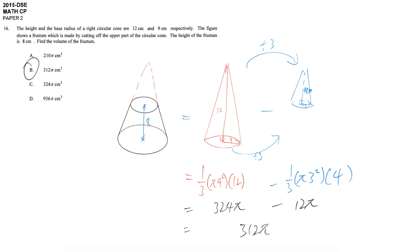Another method uses the ratio 1 to 3. Some students will use the original cone volume, then subtract using the volume ratio. Since the height ratio is 1 to 3, the volume ratio is 1 cubed to 3 cubed. You may use the volume ratio to calculate directly like this.